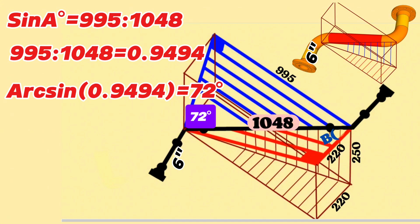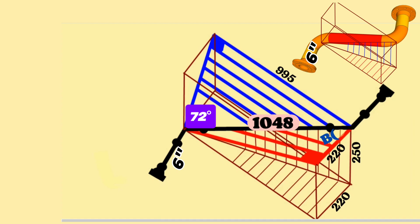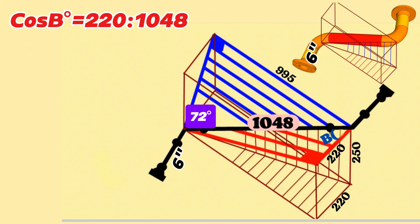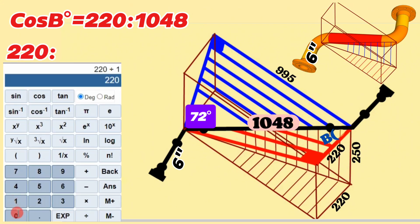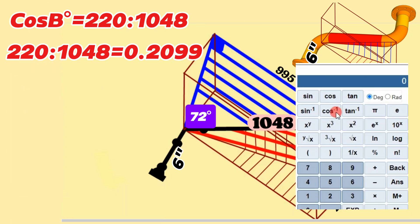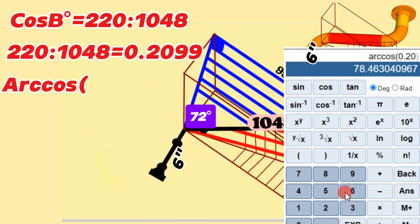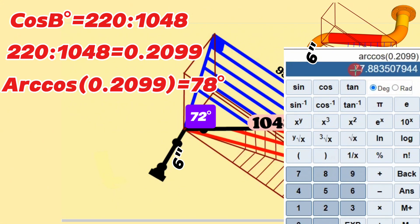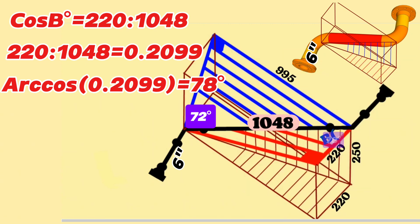Now let's calculate the cutting angle of the second elbow on top. The adjacent side in the red right triangle is 220 millimeters. The length of the hypotenuse is 1048 millimeters. According to the trigonometric function, cos B degrees equals 220 divided by 1048. We find that 220 divided by 1048 equals 0.2099 using a calculator. Using the calculator we find that arccos 0.2099 is approximately equal to 78 degrees. So the cutting angle of the top elbow is 78 degrees.